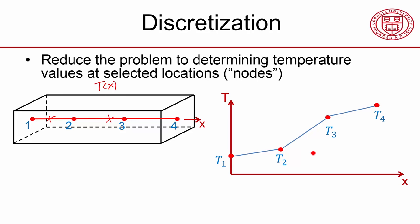So I've reduced the problem to determining temperature at four points. So instead of determining an unknown function, I'm going to determine four values. That's called discretization.